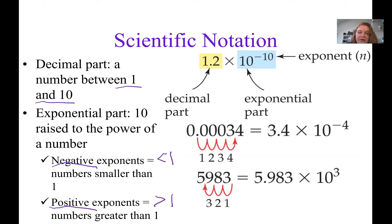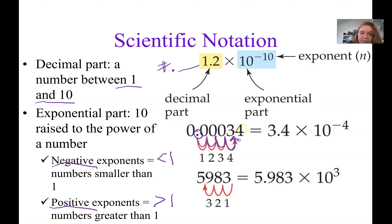There are a couple of examples showing us how to go from standard notation into scientific notation, and we're going to practice this on the next slide as well. The first step is to find the decimal place and then move it to the right of the first non-zero number. In the example with 0.00034, we move our decimal four places and rewrite it as 3.4 times 10 to the negative 4, because the original number in standard notation was less than 1.